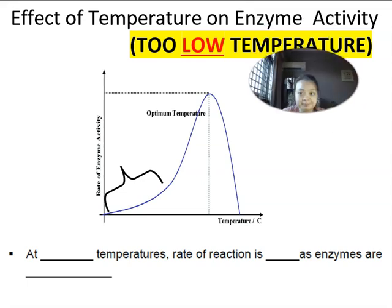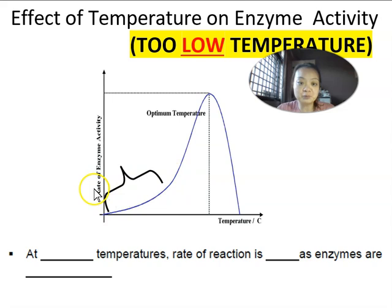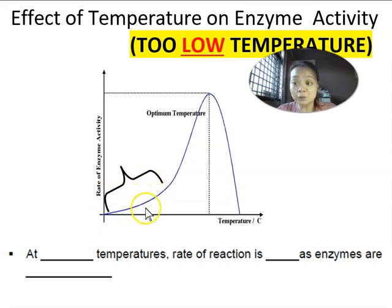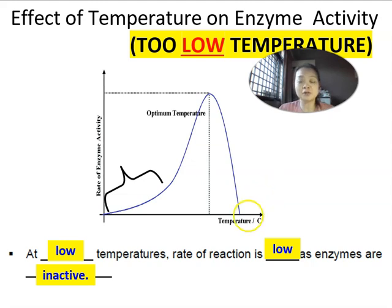Ms. Lee is now going to go into depth about how to explain the graph in detail, because this is a very common N level exam question. They will ask you to describe the shape of the graph, explain why the graph looks like this, or explain what is happening in a particular part. At low temperatures, the enzyme activity is very low because the temperature is quite low. Why? Because the enzymes move very slowly at low temperature. At low temperatures, the rate of reaction is low because your enzymes are very inactive. This happens when the temperature is very, very low.